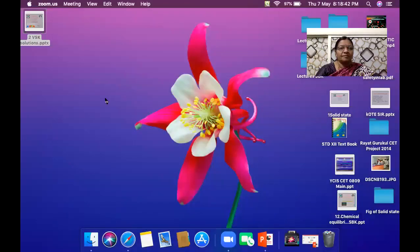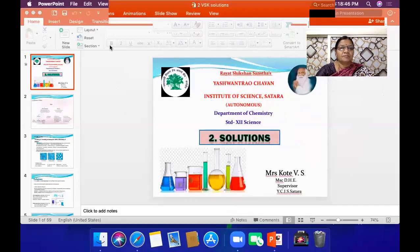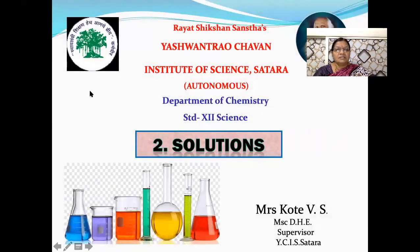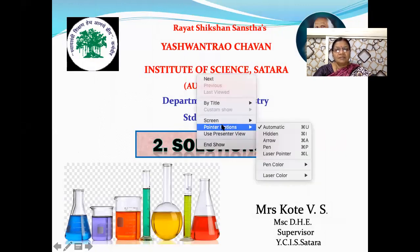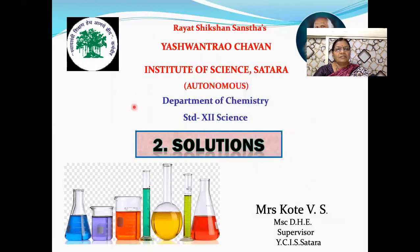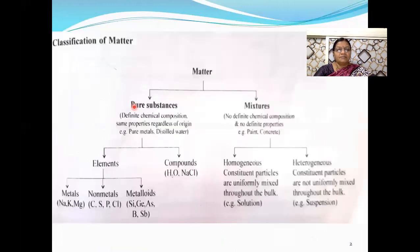Let us start the chapter Solutions. Before discussing the concepts, I am going to revise the classification of matter from the 11th standard syllabus, which you have already studied. The matter can be classified into two types: pure substances and mixtures. Pure substances have definite chemical compositions. For example, pure metal and distilled water.